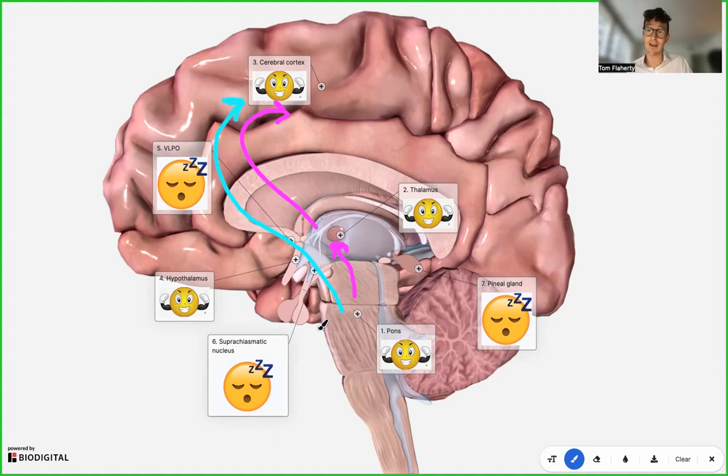I mentioned light and how that can keep you awake. That's all to do with the suprachiasmatic nucleus—that's your 24-hour circadian rhythm center of the brain. It's affected by light: the more light you're exposed to, the more likely you are to stay awake, and darkness encourages sleepiness. Finally, the pineal gland produces melatonin, which encourages sleepy states.